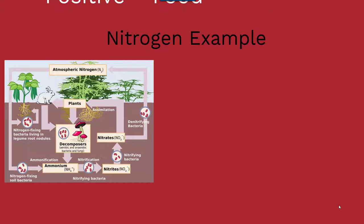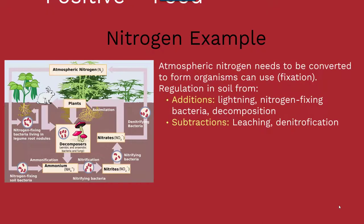As an example of nitrogen: typically within a terrestrial environment you have nitrogen present within the atmosphere, represented by two molecules of nitrogen gas. However, that atmospheric nitrogen needs to be converted to a form that organisms can use — it's inert otherwise. So it has to undergo the process of fixation, which can occur with the help of nitrogen-fixing bacteria as well as decomposers.